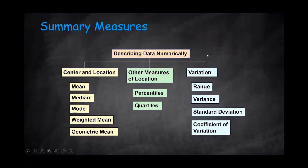Here is the summary of measurements of descriptive statistics, and you can see that it's split into three main groups: central location, variation, and other measurements of location. We're going to focus today in this video on the measurement for central location.